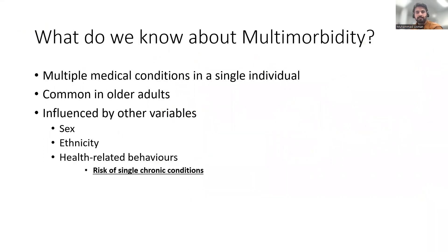The term multimorbidity broadly refers to the existence of multiple medical conditions in a single individual. For many regions of the world, there is evidence that a substantial and likely growing proportion of the adult population is affected by more than one chronic condition. However, the true extent of multimorbidity is difficult to gauge as there is no agreed definition or classification system for reporting around the world.